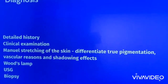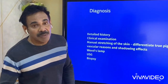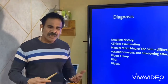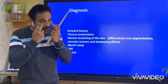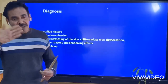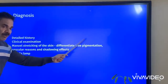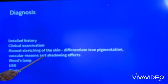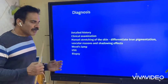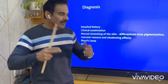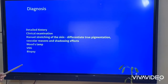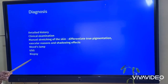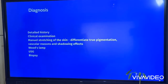Diagnosis can be a little tricky sometimes because the causes can be multifactorial. A detailed physical examination and history is mandatory. A simple stretching of the lower eyelid can differentiate true pigmentation from a vascular lesion or shadowing effect - if it is true pigmentation, when you stretch the skin the pigmentation stays there. We also use Wood's lamp to know the depth of the pigmentation, and ultrasonography mainly if it is vascular origin. Biopsy is very rare.